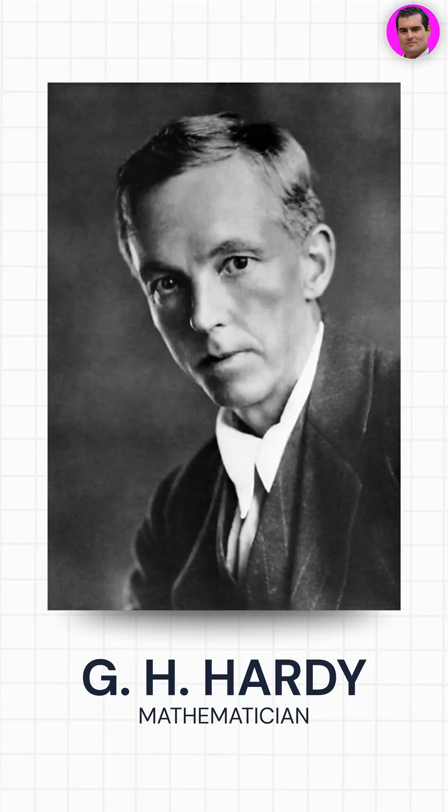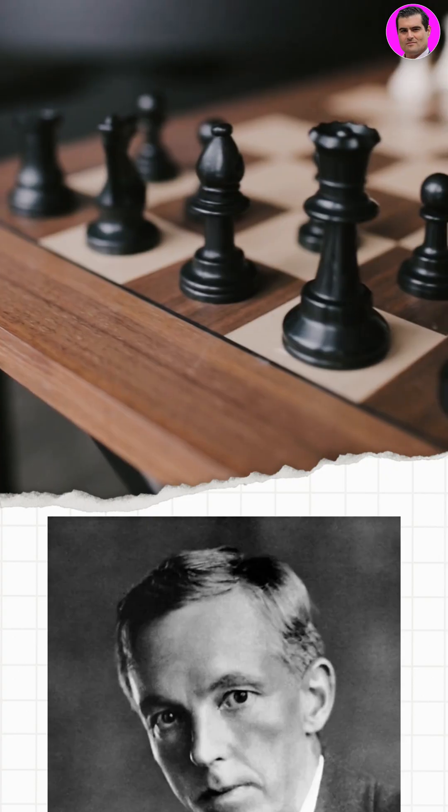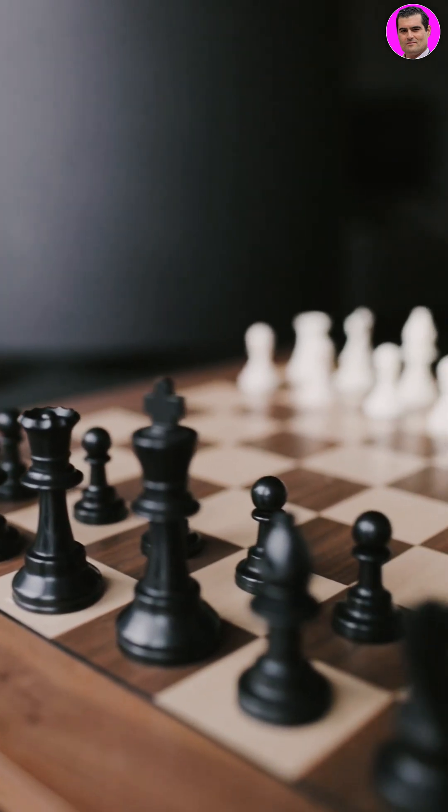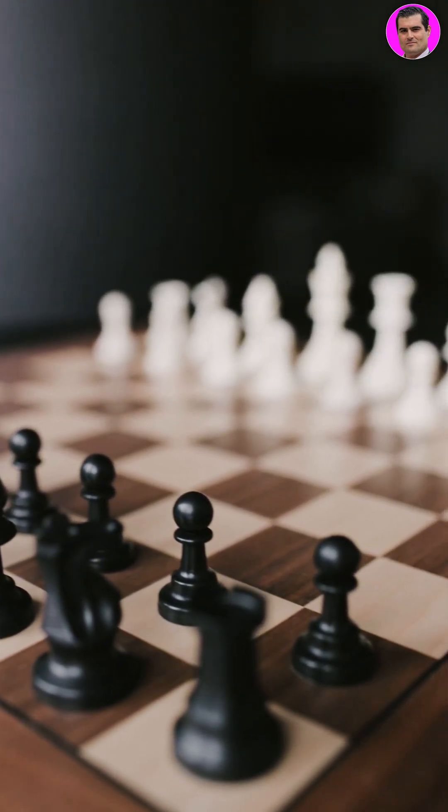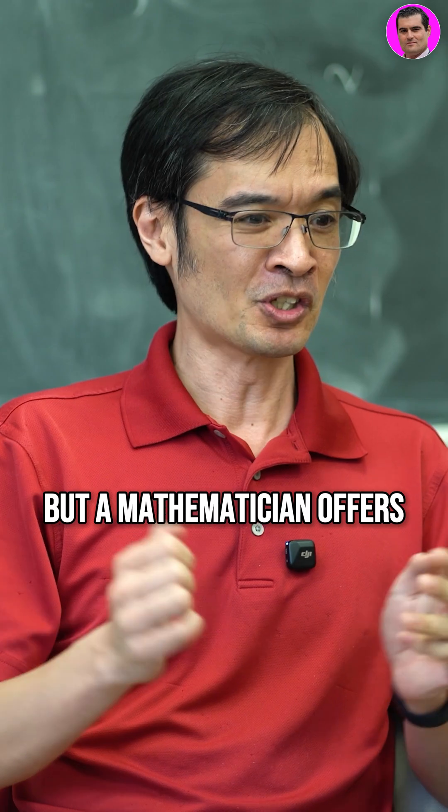Proof by contradiction. I think Hardy had a great quote that in chess, a chess player may offer a pawn or a bishop, but a mathematician offers the entire game.